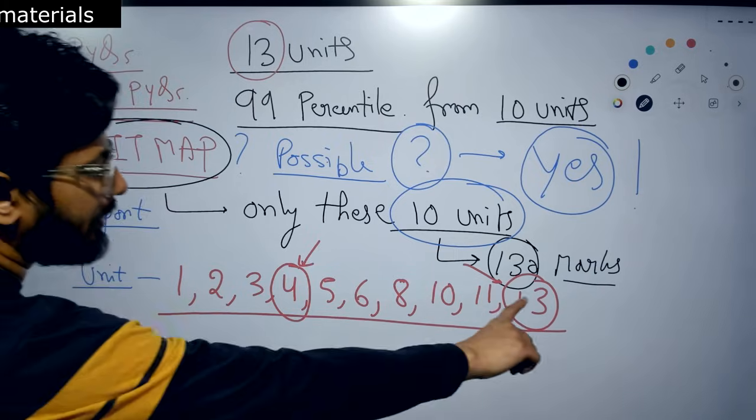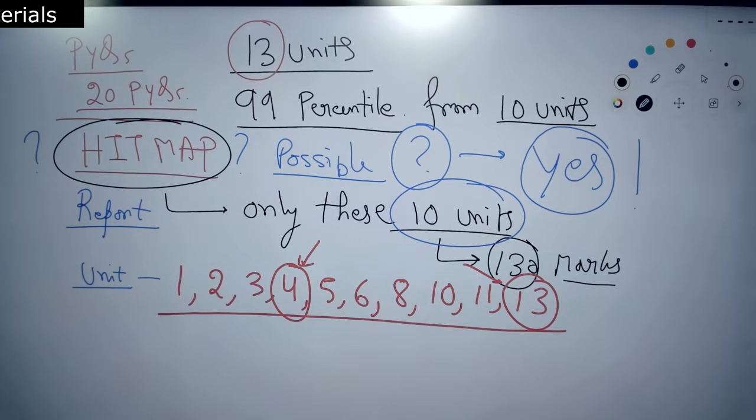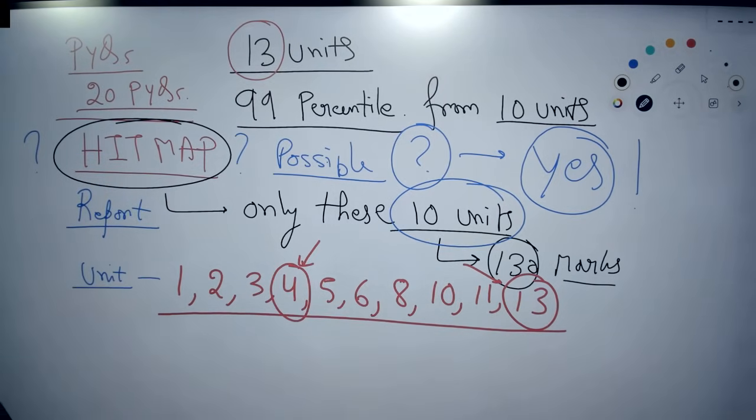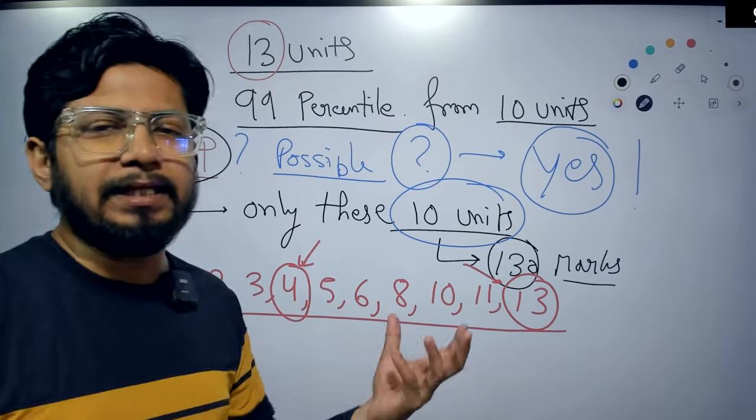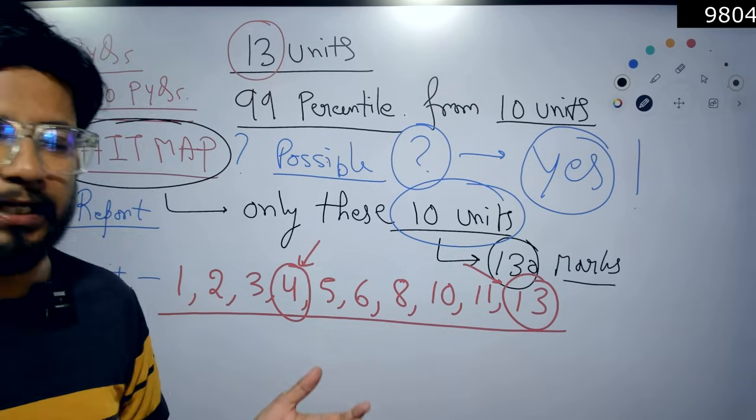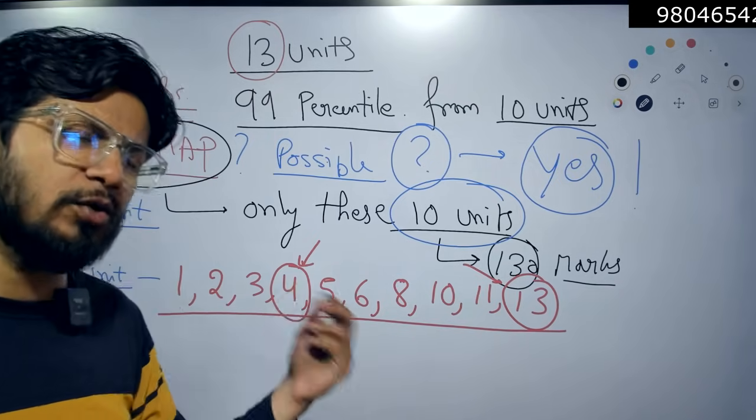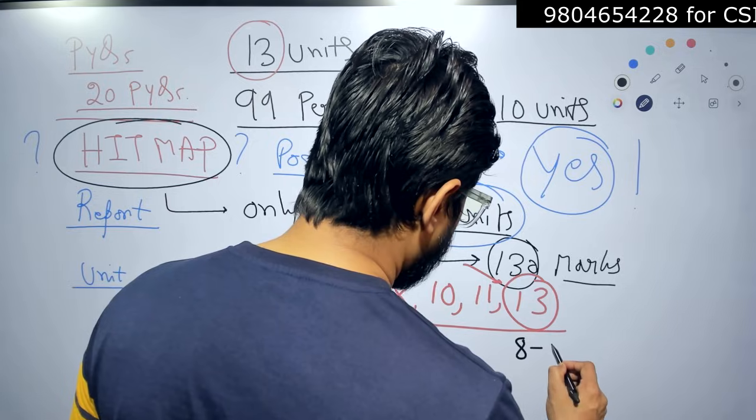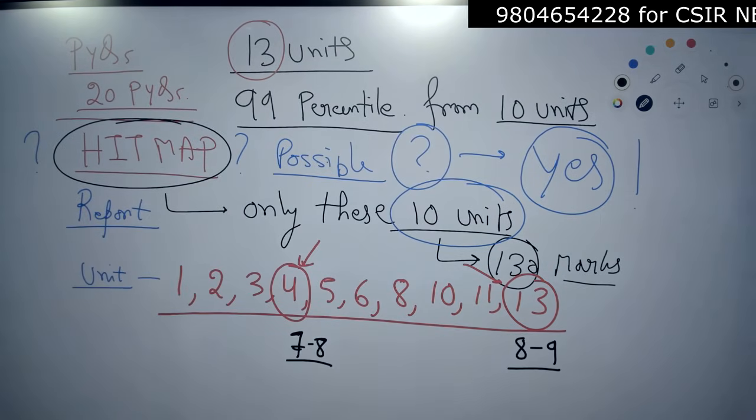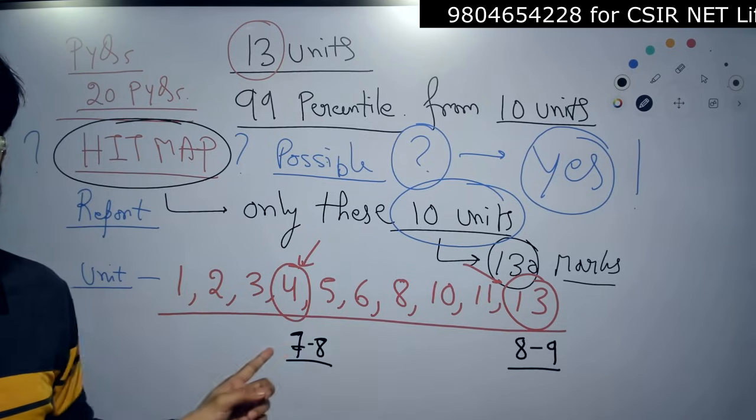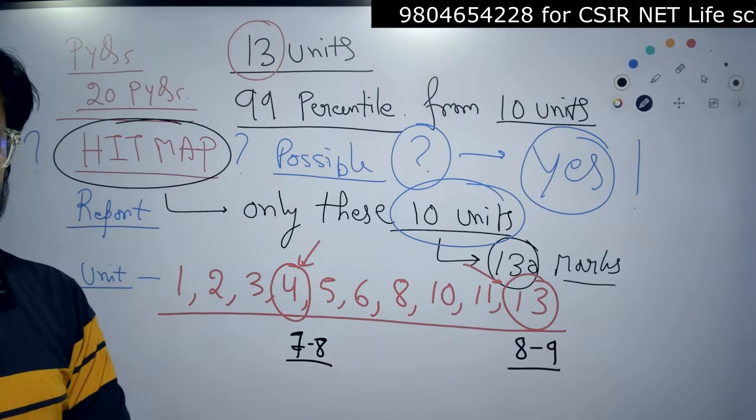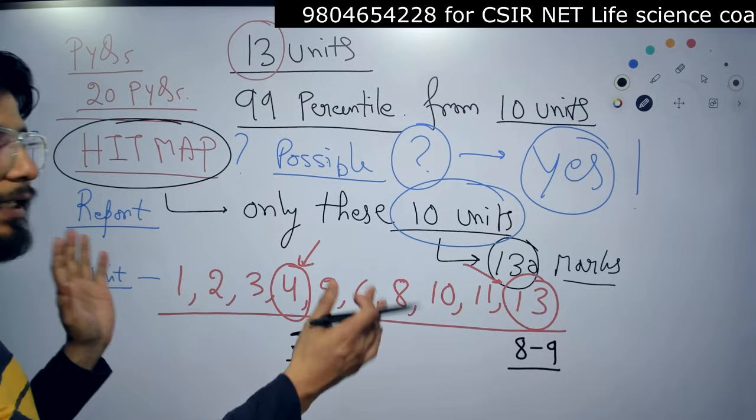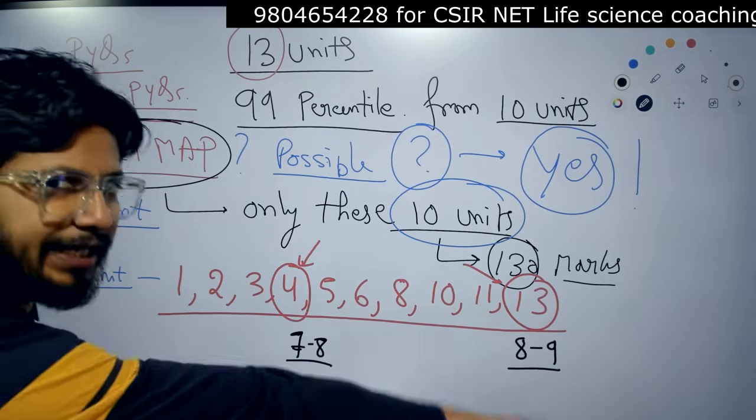If you can't prepare 10 units, then prepare 8 units by skipping 4 and 13. But skipping 4 and 13 will be challenging because many Part C questions will be missing. Approximately 7 to 8 questions in unit 4 and 8 to 9 questions in unit 13 are asked. You will lose almost 15 questions combining these two units - 15 out of 75 questions in Part C. So you need to study them, although you can study selectively.